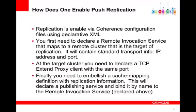How does one enable push replication? Replication is enabled via Coherence configuration files using declarative XML. You first need to declare a remote invocation service that maps to a remote cluster that is the target of replication — it contains standard transport information such as IP address and port. At the target cluster, you declare a TCP extend proxy client with the same port. Finally, you embellish the cache mapping definition with replication information, declaring the publishing service and binding it to the remote invocation service declared earlier.